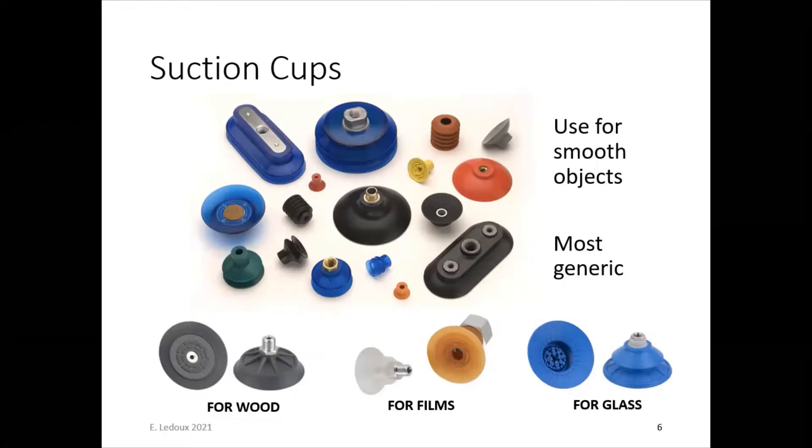Now, these are examples of different suction cups. Depending on the size and the material of the object that the robot is trying to pick up, and also its shape, then different suction cups can be used. So you can see here on the bottom that the suction cup for wood, for plastic or paper film, and for glass are each shaped a little bit different.